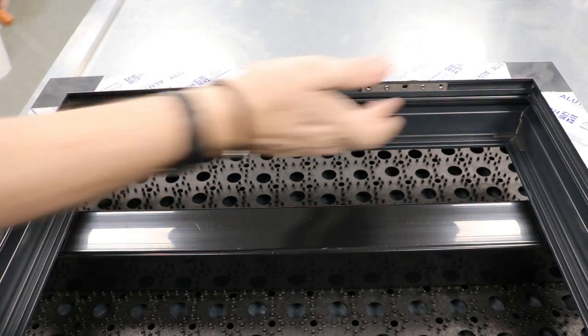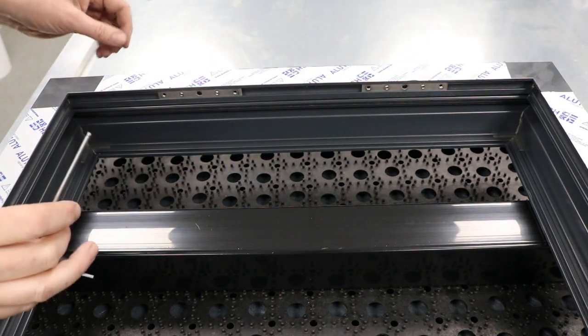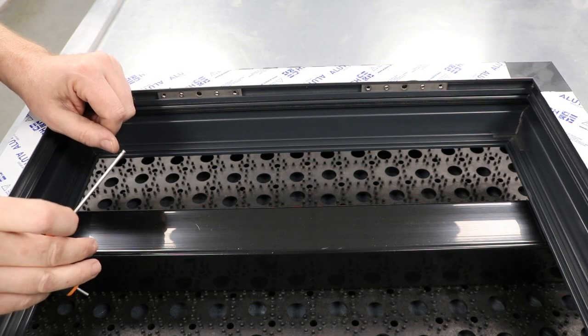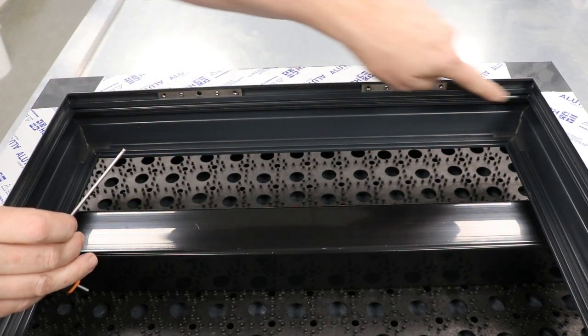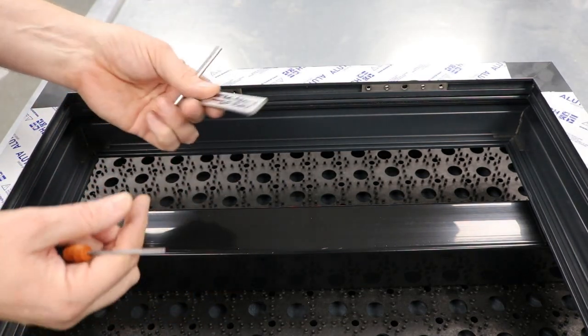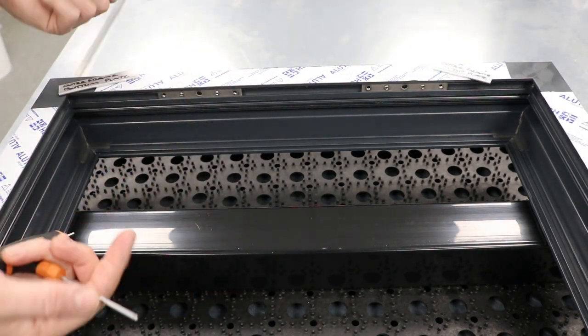We're now going to set the hinge plate positions. Using the Profile Systems BF73 catalogue which describes the spacings, I've made myself some little jig plates. So I have one for the top and one for the bottom.